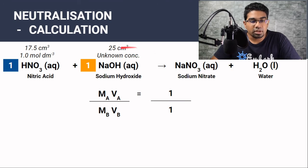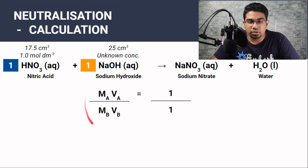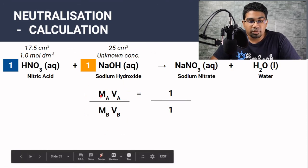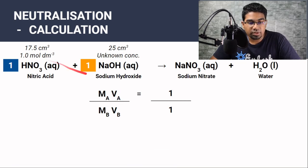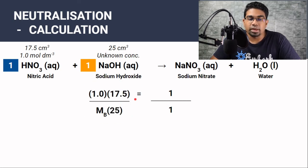All we have to do is substitute all these values into the formula. So now the molarity of acid and the volume of acid we have, we substitute inside. And the volume of the base we also have. So we substitute everything inside. This is what we get.